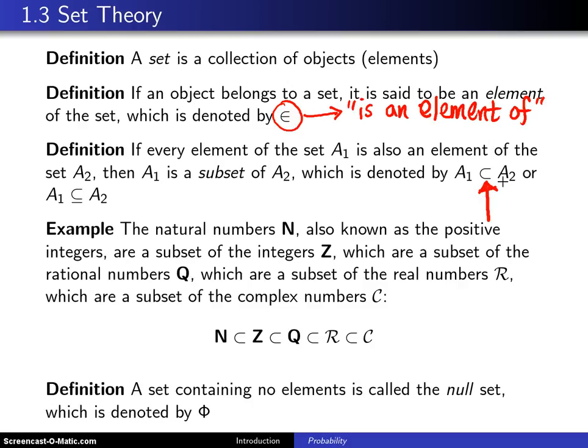Here's a quick example. The natural numbers, which are the counting numbers 1, 2, 3, 4, etc., are a subset of all integers, and all integers include the positives, the negatives, and zeros. And those are a subset of the rational numbers Q. And those are a subset of the real numbers R. And those are a subset of the complex numbers C. So if you look at this string here, you have a string of subsets from the natural numbers to the complex numbers.